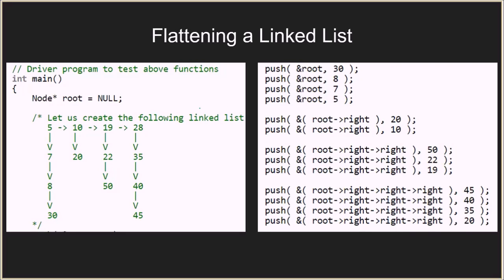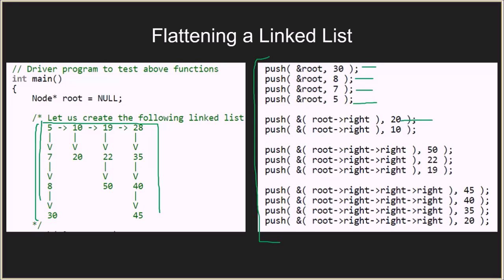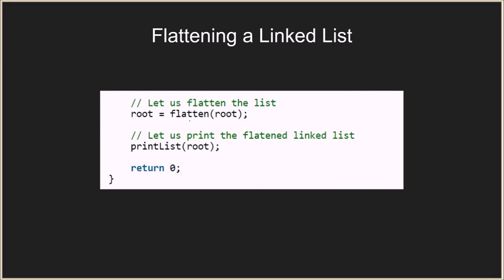In the driver method we first create the 2D structure using push statements — for example, pushing 30, then 8, then 7, then 5 builds the first column. Then 20 is pushed to the right of root, and 10 is pushed above it. We create the whole structure this way, then call the flatten function passing root as argument, get the flattened linked list, and print it. That's how we simply flatten the linked list using recursion.